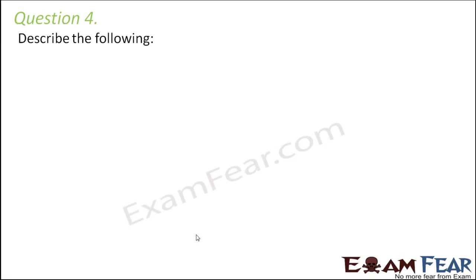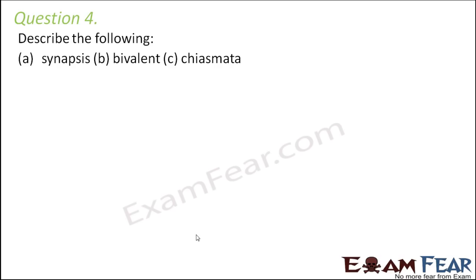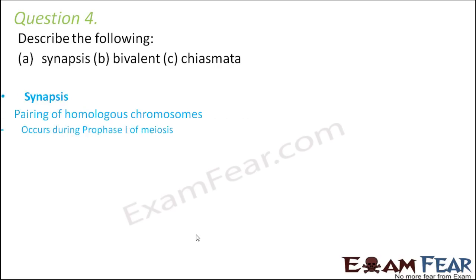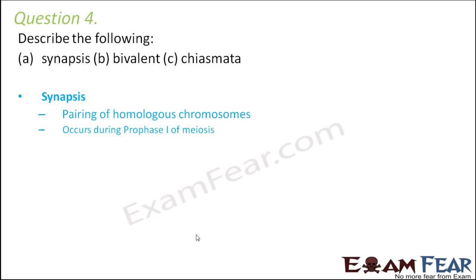Question number 4: Describe synapsis, bivalent, and chiasmata. All of these take place during prophase 1 of meiosis 1. Synapsis is nothing but pairing of the homologous chromosomes — it occurs during prophase 1 of meiosis.